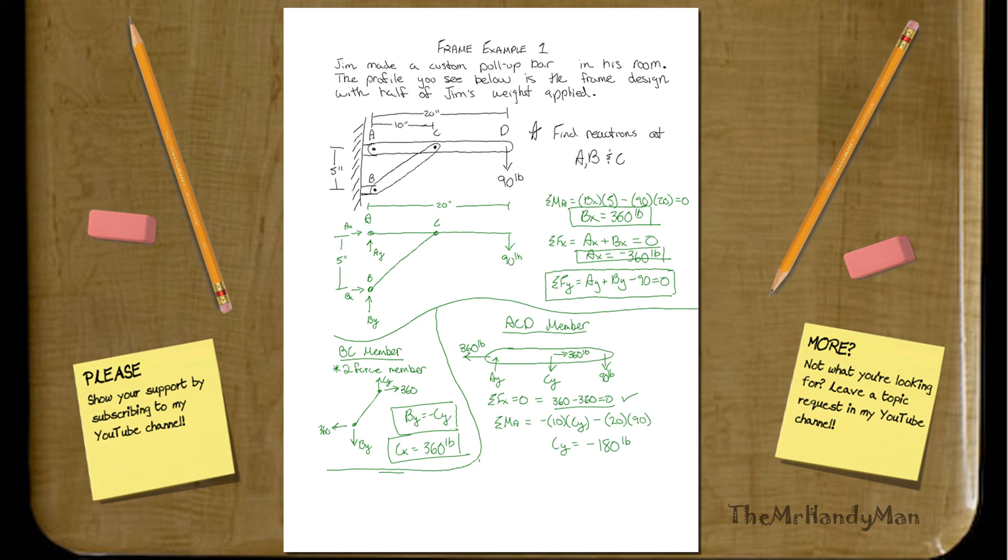Well, C_Y will then equal negative 180 pounds, which means basically it's going to be pushing upward at 180 pounds, which makes sense because it's holding this member upward. So we have C_Y, which equals 180.